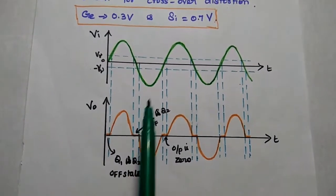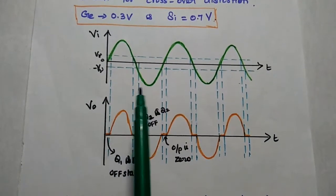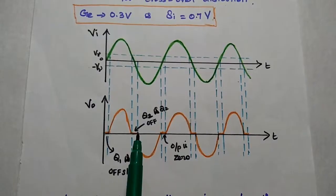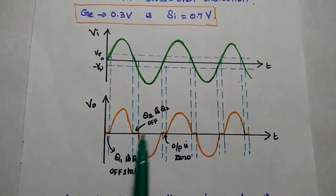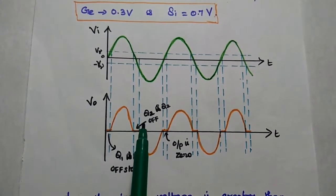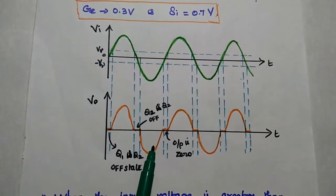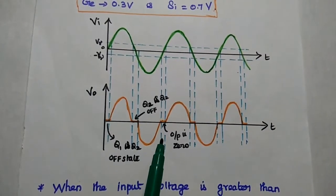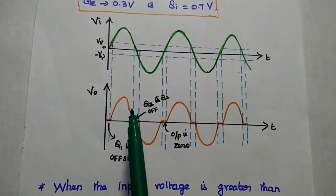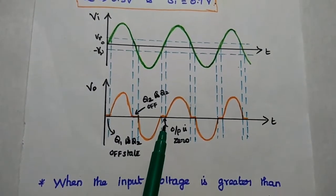Due to this crossover from positive to negative and negative to positive, because of this cut-in voltage, there is no output. Whenever the input voltage is less than the cut-in voltage, there is a time period between the crossing of half cycles of the input signal for which no output is present — that means zero output. This is called crossover distortion. Due to this crossover distortion, each transistor conducts for less than half cycle rather than the complete cycle.